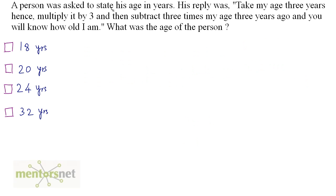A person was asked to state his age in years. His reply was: take my age 3 years hence, multiply it by 3, and then subtract 3 times my age 3 years ago, and you will know how old I am. Let the current age be x years. His age 3 years hence is x plus 3; multiply it by 3.